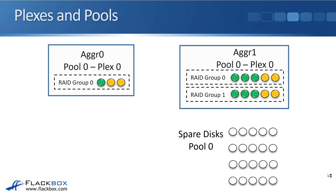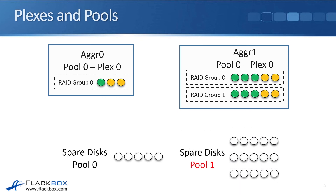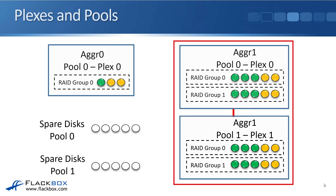Now let's say we decide to SyncMirror aggregate one. Currently, all spare disks are in pool zero, but to make it a SyncMirror aggregate we need disks in pool one. So we turn off disk auto-assignment and manually place half the disks in pool zero and the other half in pool one. The ONTAP system then makes another copy of the aggregate — so aggregate one now has plex zero and plex one, both containing exactly the same data, mirroring each other. You can see that we're using twice the number of disks to mirror data onto plex one.